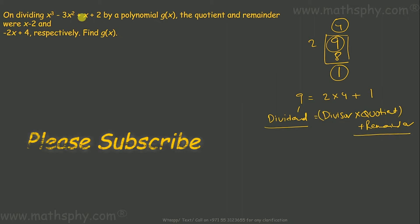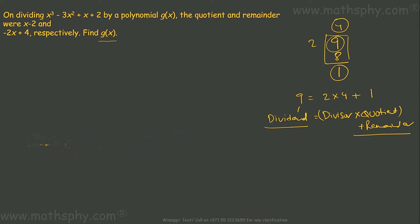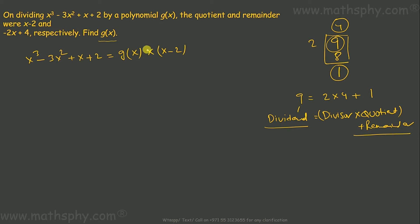Here we have the dividend, we have the quotient, and we have the remainder. Can we find out the divisor? x cubed minus 3x squared plus x plus 2 equals divisor into quotient, which is x minus 2, plus remainder, which is negative 2x plus 4.